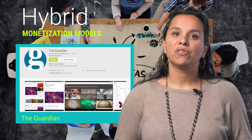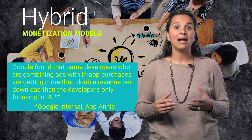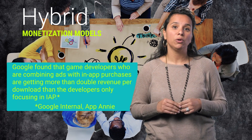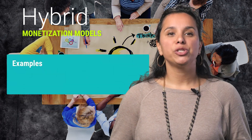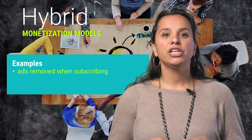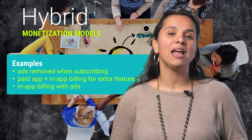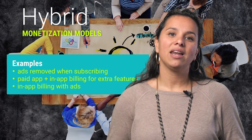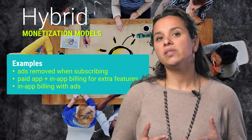Increasingly, apps and games are finding success with hybrid monetization models. In fact, Google found that game developers who are combining ads with in-app purchases are getting more than double revenue per download than developers only focusing on in-app purchases. Some other hybrid options would be to show ads in your app and remove them if a user buys a subscription. In addition to selling your app outright, you could also include advertising or use in-app billing to sell additional features or content. This model could work well for any app or game, but is most appropriate for apps with extensive features or those that address a narrow niche.